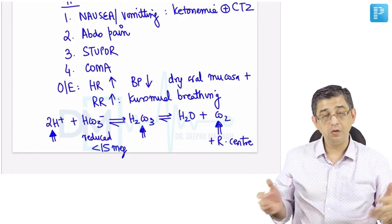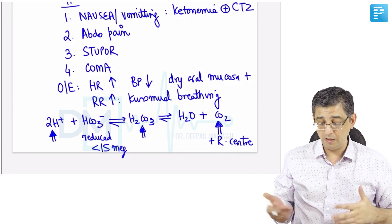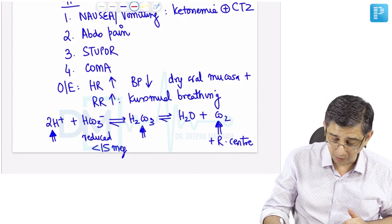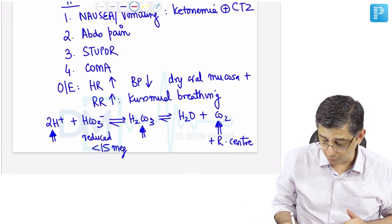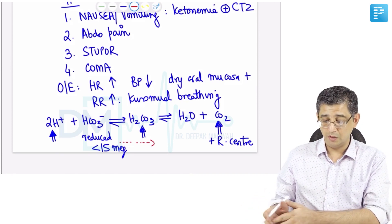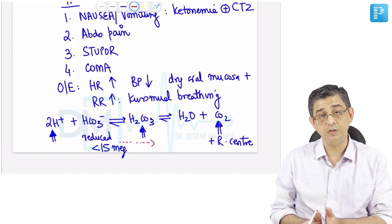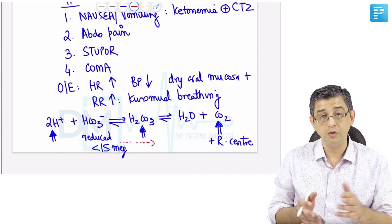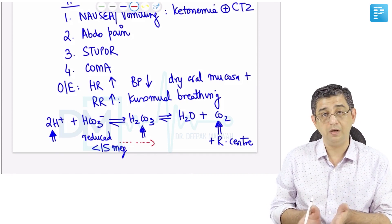So it will cause washout of carbon dioxide because he will breathe faster. If you remove carbon dioxide from the body, then this chemistry equation will progress in this particular direction. If you remove carbon dioxide from the body, then to produce more carbon dioxide, more protons will be consumed. And if protons are consumed, it is good. Why? Because protons are the troublemaker.